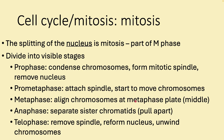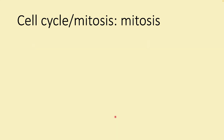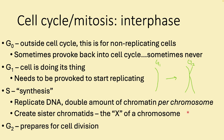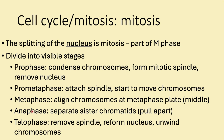Metaphase is where we align chromosomes in the middle section called the metaphase plate — it's a three-dimensional disc, not flat. Anaphase means pull apart: we separate those sister chromatids, ripping the X in half. Telophase is when we start getting rid of the spindle; the halves are far away from each other — 'telo' means far away, like television. We reform the nucleus and the chromosomes uncondense or unwind, so they're no longer visible as distinct lines.